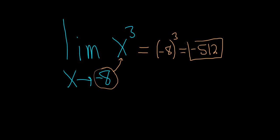And so what this means is that when x gets really close to negative 8, x cubed gets really close to negative 512. So if we were to look at the graph of x cubed, it would look something like this.